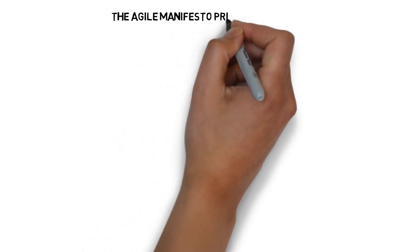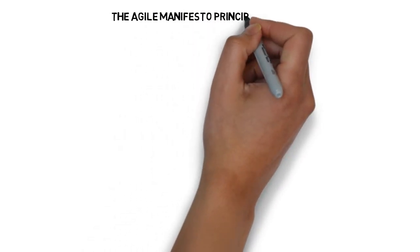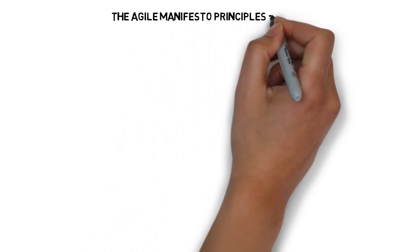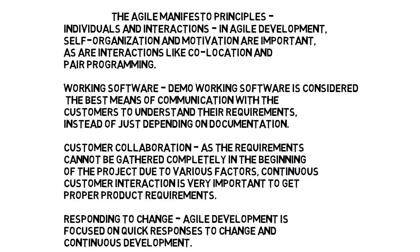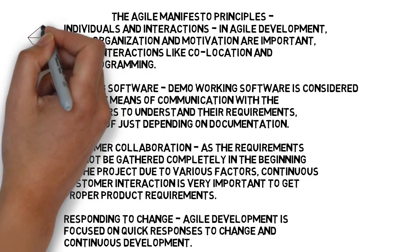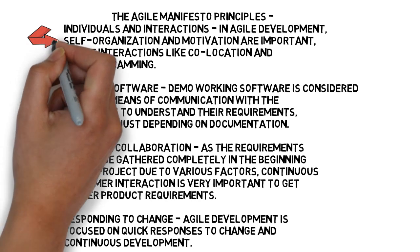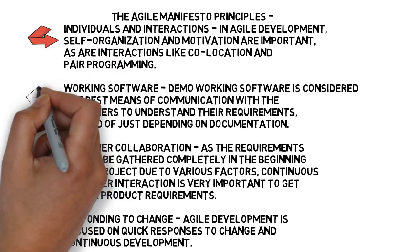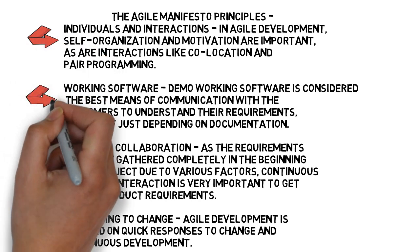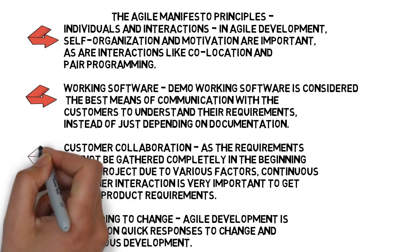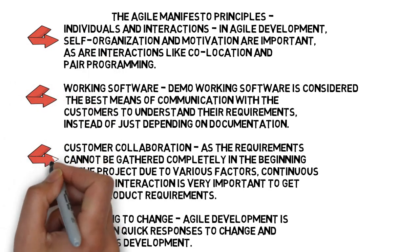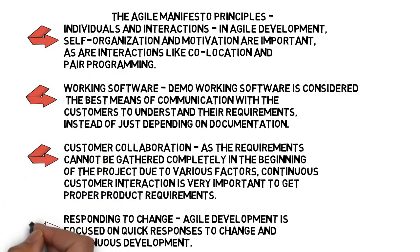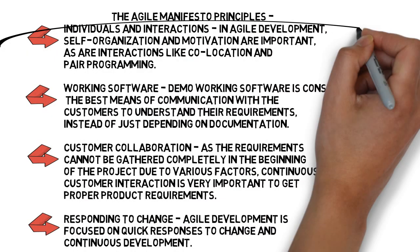Now we are going to discuss the Agile Manifesto principles. There are four Agile Manifesto principles: individuals and interactions, working software, customer collaboration, and responding to change.